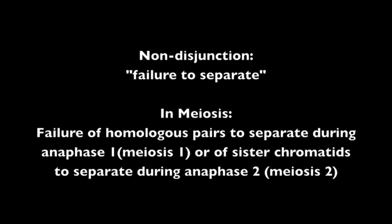Nondisjunction refers to the failure to separate. As this applies to meiosis, it is the failure of homologous pairs to separate during anaphase 1 of meiosis 1, or of sister chromatids to separate during anaphase 2 of meiosis 2.